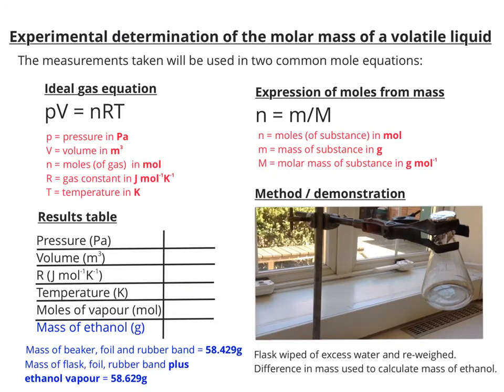At this point, this flask is wiped of any excess water on the outside and it's re-weighed. The difference in the mass can be used to calculate the mass of the ethanol. That gives us 0.2 grams.